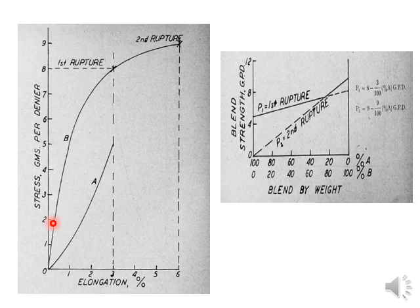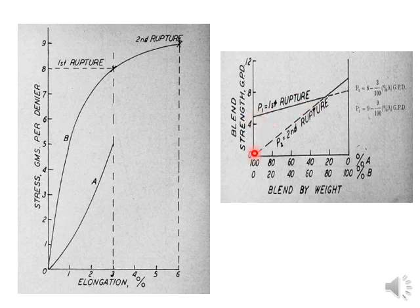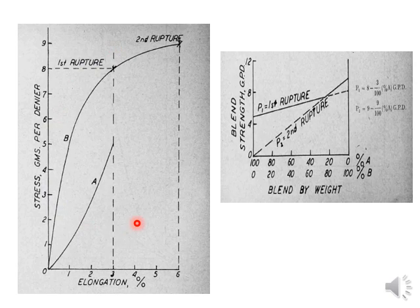Now, unlike the earlier two examples, in this third example the relative position of fiber A and fiber B has changed again with a different type of stress-strain curve. Here, whatever the blend ratio of fiber A and B, the tenacity of the yarn is always higher than the tenacity of the yarn having 100% of the weaker fiber. There is never a dip as seen in the previous cases. This is the best case scenario for the relative position of the stress-strain curves of the component fibers.